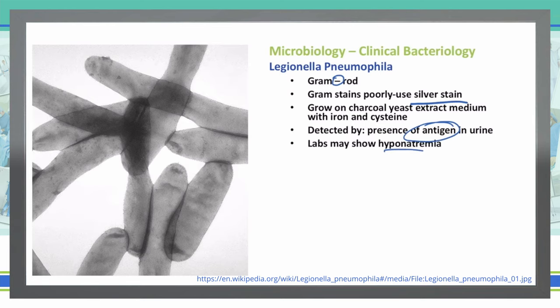How do we get this bacteria? We get this from aerosol transmission. Most of the time this comes from a water source that has been stagnant — not moving for a long time. Legionella can grow inside it, and then when it does move somehow, it can become aerosolized and become infectious if someone breathes it in.